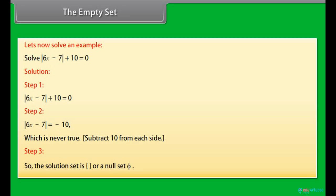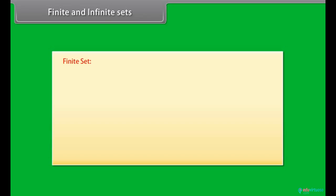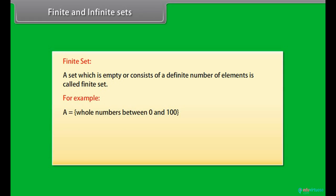Finite and infinite sets. Finite set. A set which is empty or consists of a definite number of elements is called finite set. For example, A is equal to whole numbers between 0 and 100, B is equal to primary colors, C is equal to prime numbers less than 12 are the finite sets.